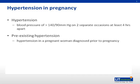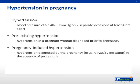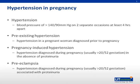Pre-existing hypertension is defined as hypertension in a pregnant woman diagnosed prior to pregnancy. Pregnancy-induced hypertension is hypertension diagnosed during pregnancy, usually more than 20 weeks gestation, in the absence of proteinuria. Preeclampsia is hypertension diagnosed during pregnancy, usually more than 20 weeks gestation, in the presence of proteinuria.